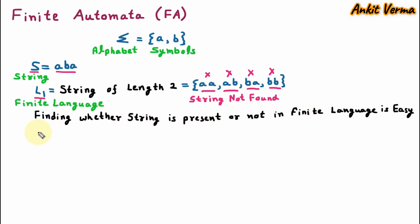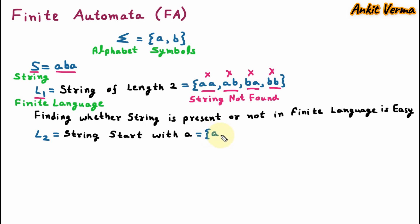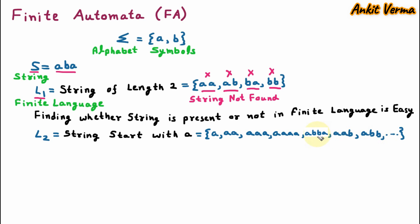Now let us suppose we have one more language, L2, which is the set of all strings that start with a. From the given alphabet we create this language where every string starts with a — so we have: a, aa, aaa, aaaa, five times a, six times a, and so on, then aab, abb, and so on. This is an infinite language because there are unlimited strings possible.